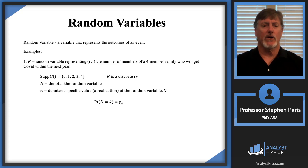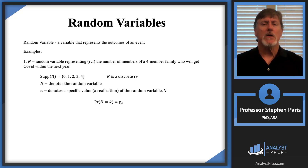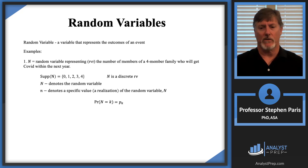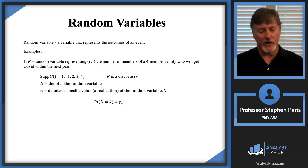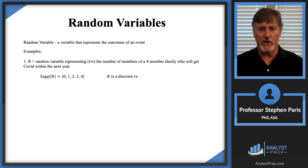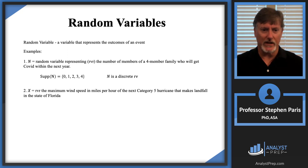So that's an example of a discrete random variable, because I was able to list out the values in the support. Random variables can be categorized as either discrete or continuous. Now let's look at a second example.